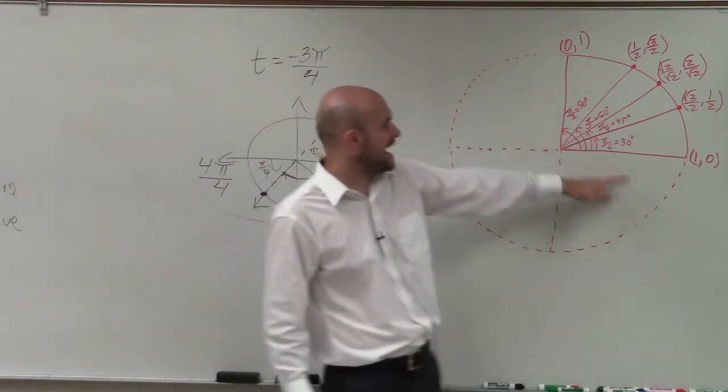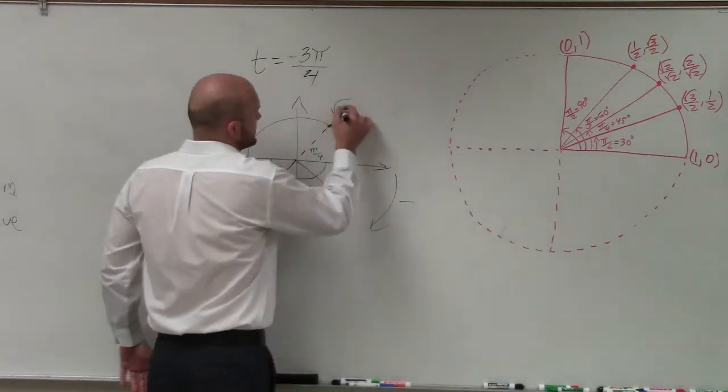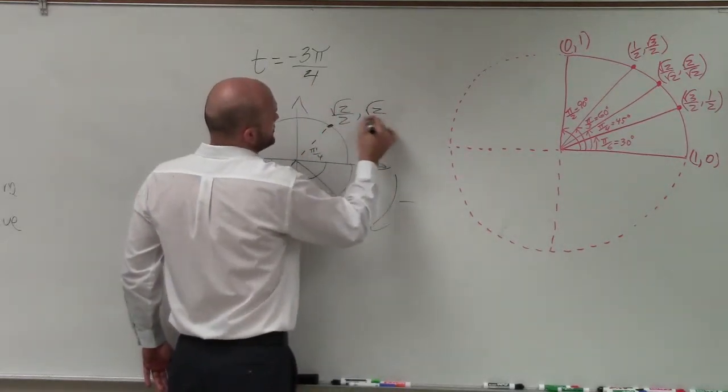So what angle here is π over 4 away? Well, that's going to be this point over here. So this point is square root of 2 over 2, comma square root of 2 over 2.